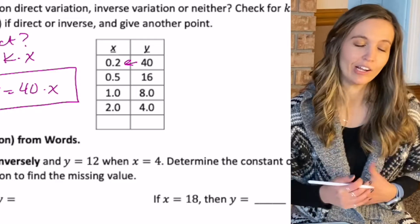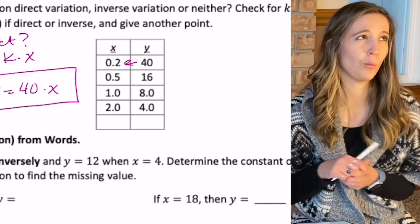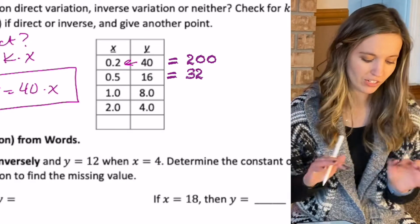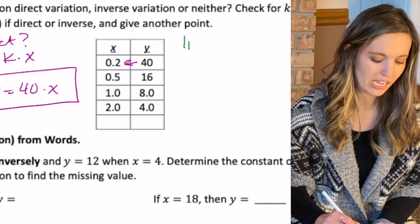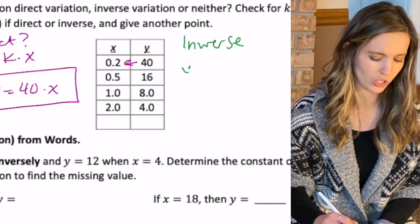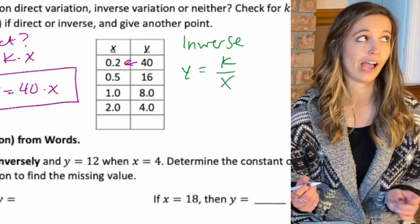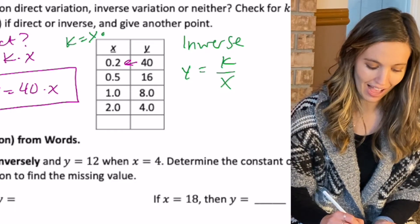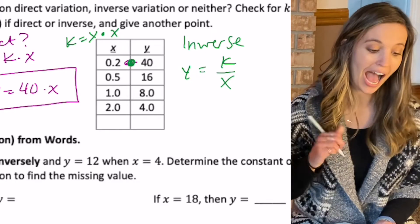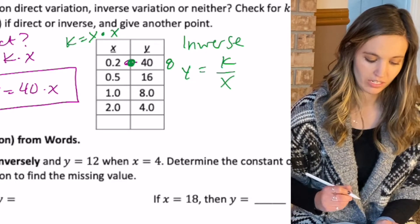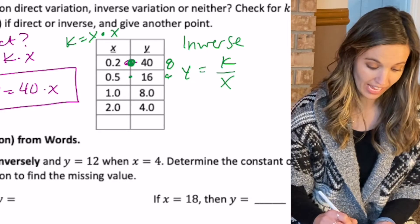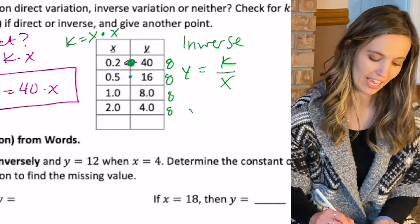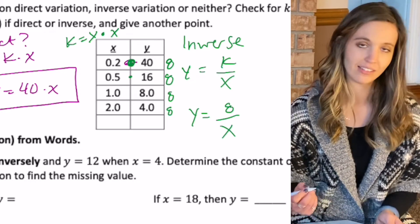For the second table, checking direct variation: 40 divided by 0.2 is 200, and 16 divided by 0.5 is 32 — not constant, so not direct. Let's try inverse: k equals y times x. So 40 times 0.2 is 8, 16 times 0.5 is 8, 8 times 1 is 8, and 4 times 2 is 8. This is inverse variation — y equals 8 divided by x.